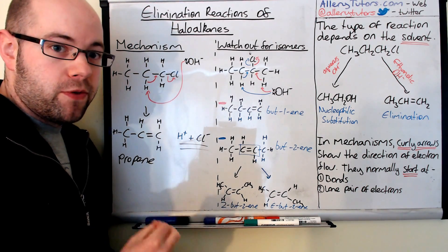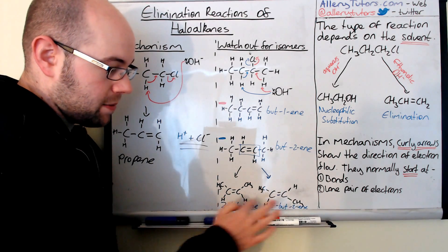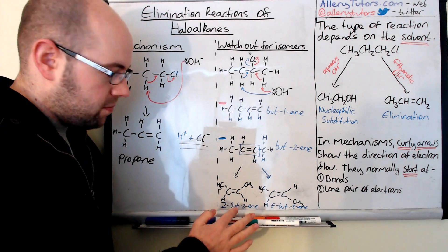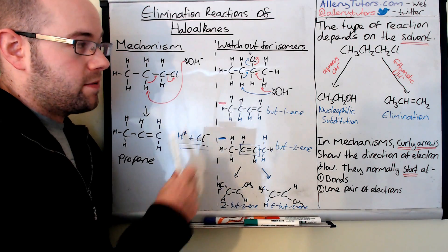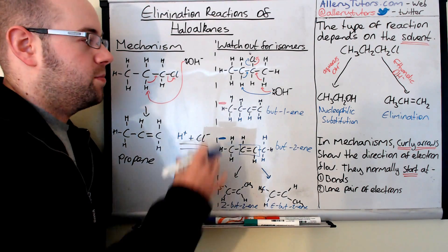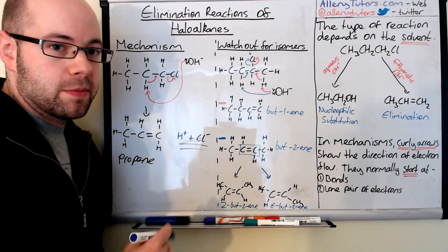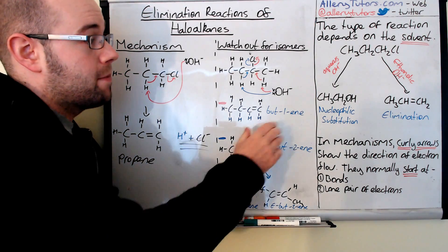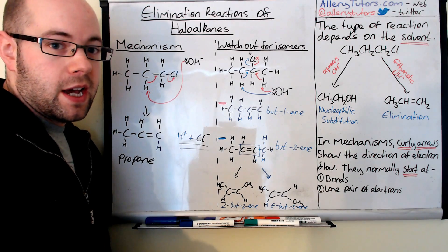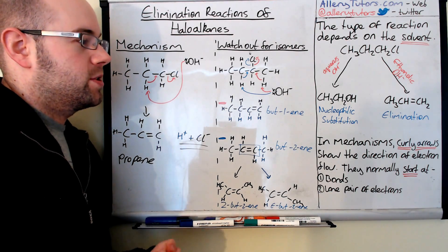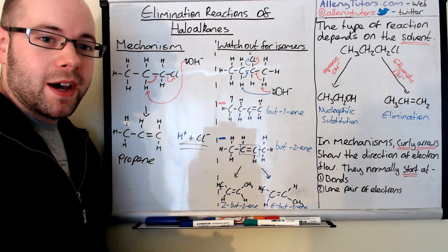So we're forming three types of isomer: but-1-ene, Z-but-2-ene, and E-but-2-ene. It's not a brilliant reaction if you want a specific isomer, because we're getting a lot of impurities. You might get more of one type than another depending on the sterics of the molecule, but that's not required at AS level. I hope that helps. Bye.